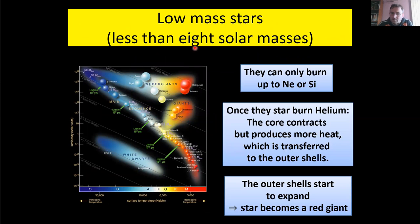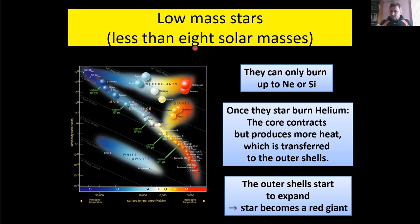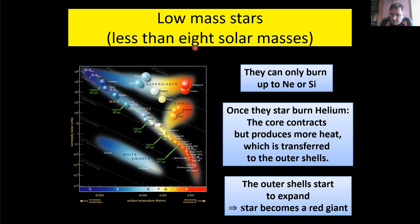For low mass stars — less than eight solar masses — they might only be able to burn up to neon and silicon. The less mass, the less pressure in the center, the lower the temperature, the lower the Maxwell-Boltzmann distribution, the lower the reaction rates. They often cannot overcome the Coulomb barrier for heavier elements, because heavier elements have more protons and therefore a higher Coulomb barrier.